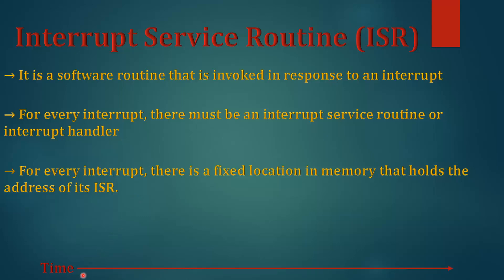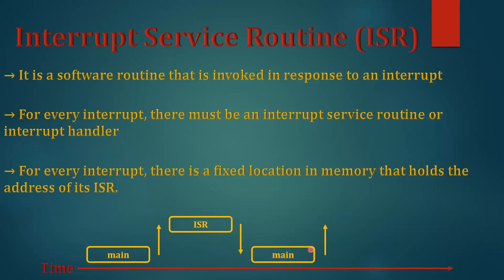Let's suppose this is time on a graph and the program execution starts. Initially, the program is at main, and then the program jumps from main to the Interrupt Service Routine, and then from the Interrupt Service Routine back to main — then again repeating the same process. This process is done so fast that we observe the main function and Interrupt Service Routine appearing to run in parallel, because the time gap between these two events is very small.